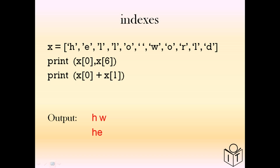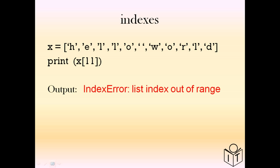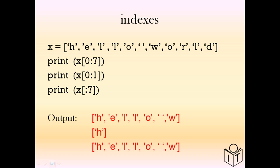Similar to strings, we look at the index. Here we have list x — x[0] and x[6] are going to be letters 'h' and 'w'. x[0] + x[1] will concatenate the two letters together to give 'he', the first two letters. If we try to access something in the list that's not there — an index that's too high — we get an 'out of range' error message. As with strings, from 0 to 7 gets the first to the seventh character. We don't need to put the 0 in.